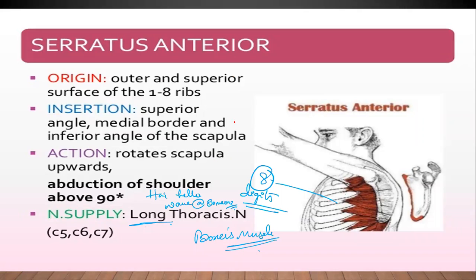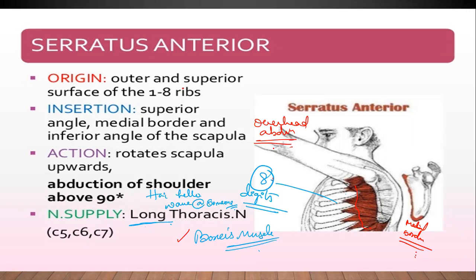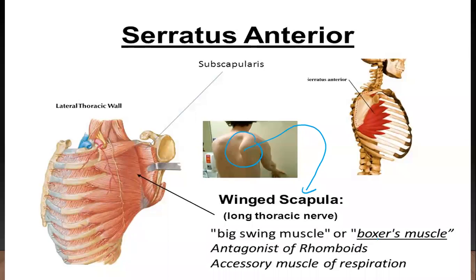The serratus anterior has eight digitations from the medial border of the scapula. Paralysis of this muscle means a boxer cannot do a punching action, and overhead abduction is also lost. The long thoracic nerve supplies only this one muscle — so if the muscle doesn't function, the nerve is damaged. This results in winging of scapula, where the scapula stands out like a bird's wing.